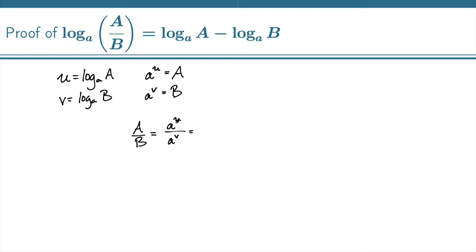But we can use the exponent law that when you are dividing two exponentials with the same base, you can subtract the exponents. So I have now capital A over capital B equals a to the u minus v.